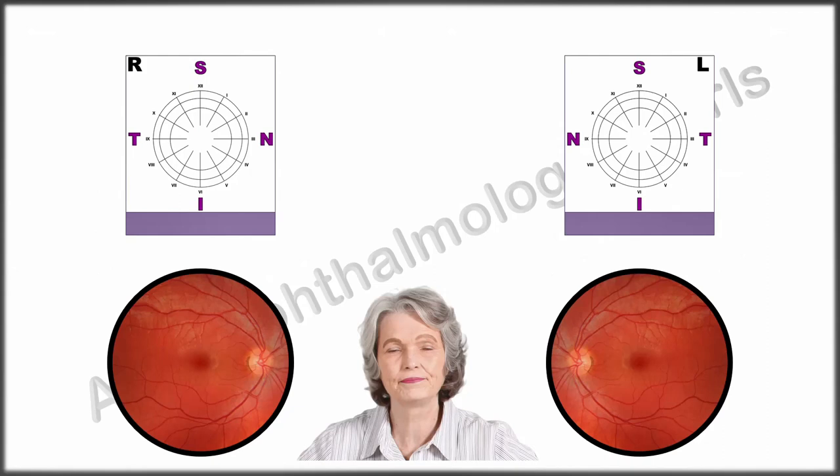So these are the charts and fundus images with their respective anatomic orientations. The three golden rules to follow are: 1. Invert the chart with respect to the patient.